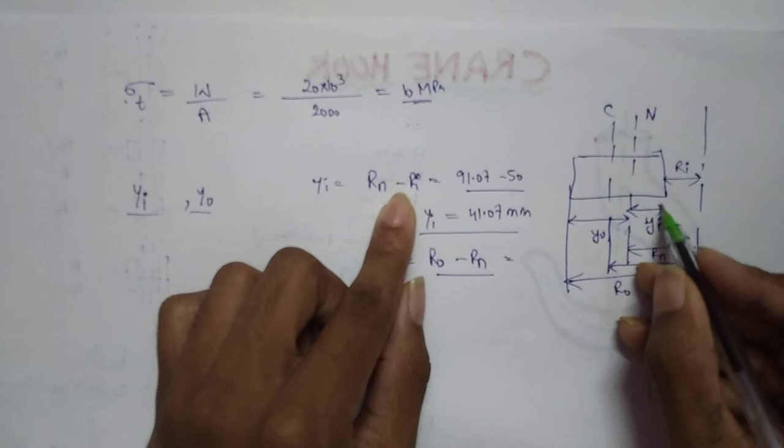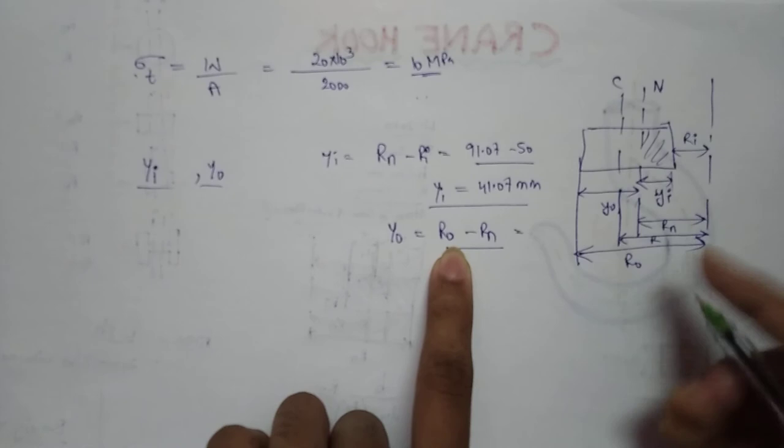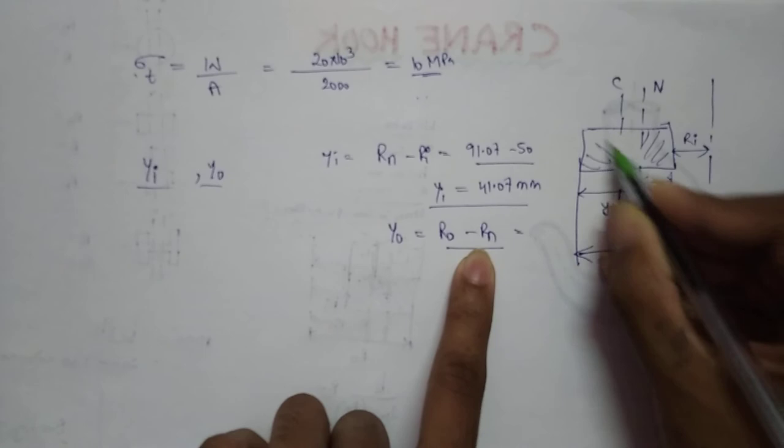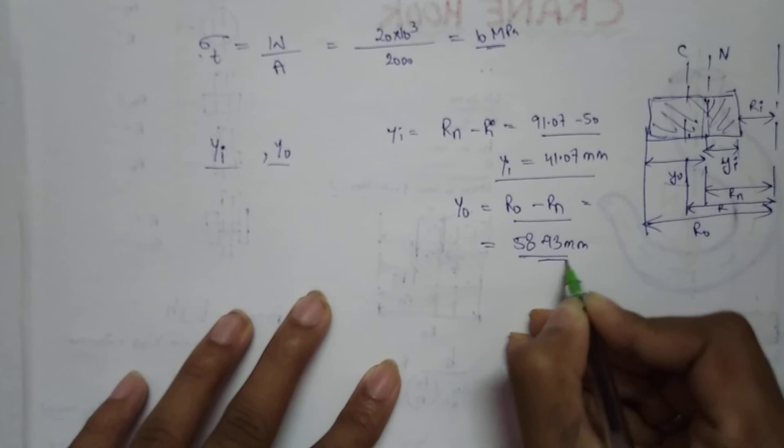To clarify: for y_i we take R_N minus R_i, giving us the inner portion. For y_o we take R_o minus R_N, giving us the outer portion. So y_o = 58.93 mm.